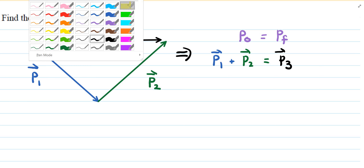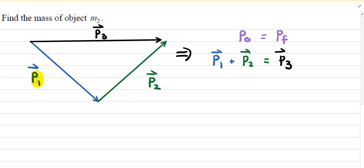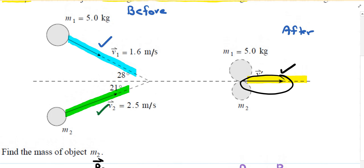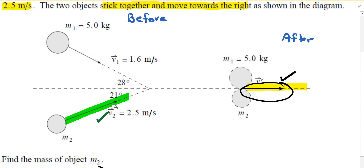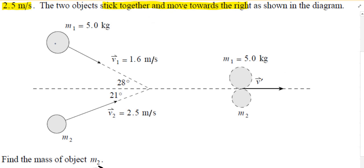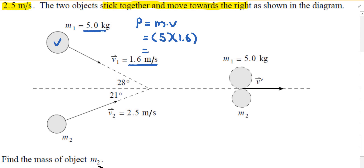Let's find the magnitude of the first momentum vector P1. Going back to the original problem, the first object has a mass of 5 kilograms and a speed of 1.6 meters per second. Momentum equals mass times speed: 5 times 1.6 equals 8 kilogram-meters per second.